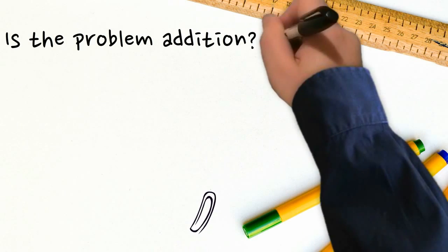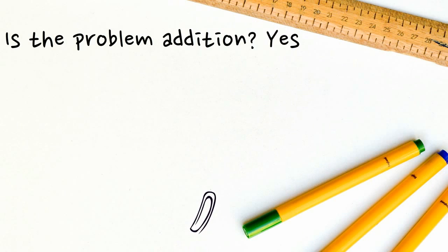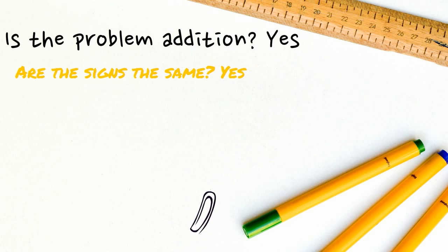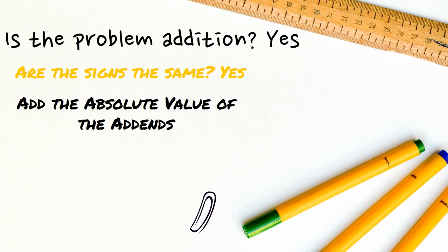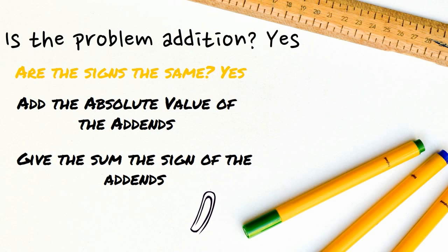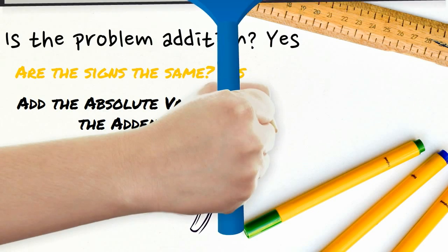Ask yourself: is the problem addition? If yes, are the signs the same? If yes, add the absolute value of the addends, and give the sum the sign of the addends.